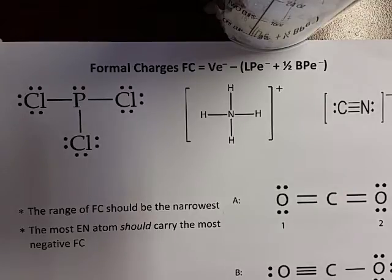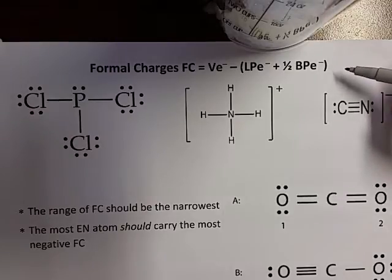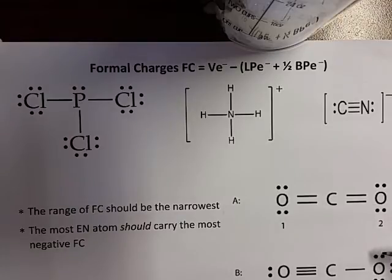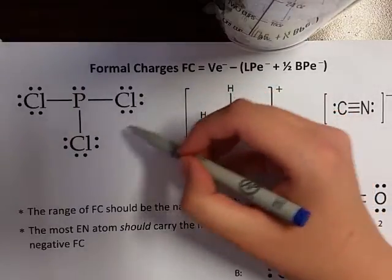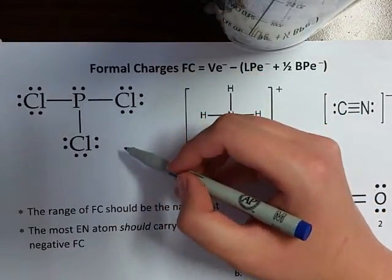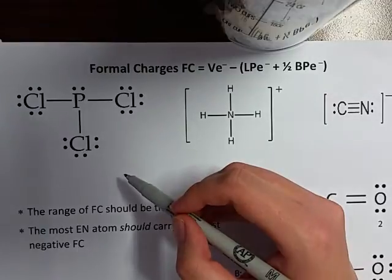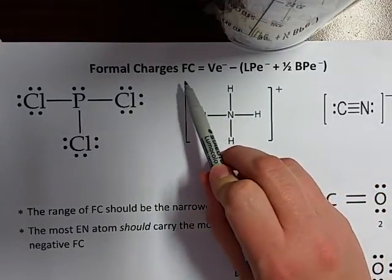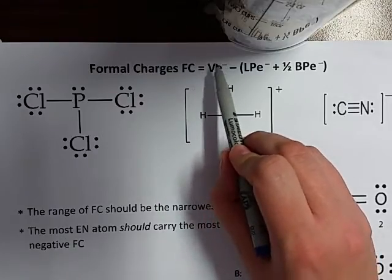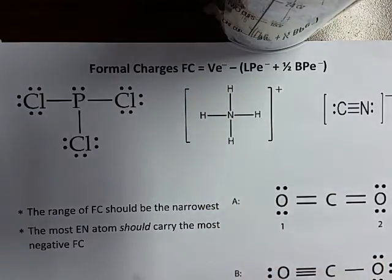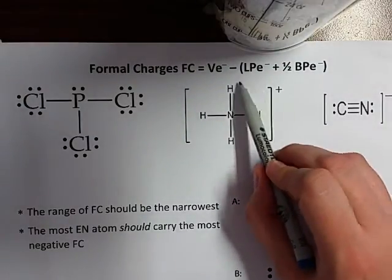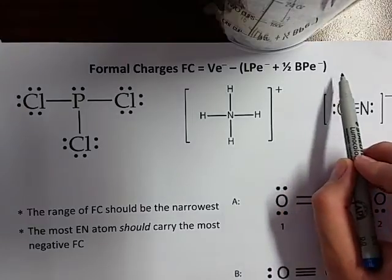Now we're moving to the second and slightly more complicated stage of the lecture where we look at formal charges. Remember we said sometimes there is resonance and one would need a way to distinguish between the best structure. Formal charge is the charge which an atom is holding within a molecule, giving an indication of where the more negative and positive portions are. The formula is: formal charge equals valence electrons minus lone pair electrons plus half the bonding pair electrons.